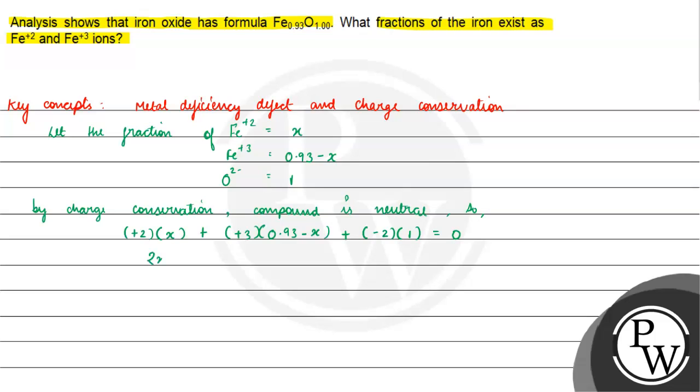Now 2x plus 2.79 minus 3x minus 2 equals 0.